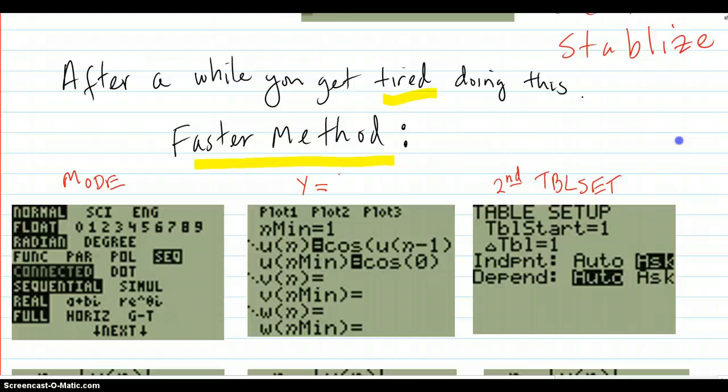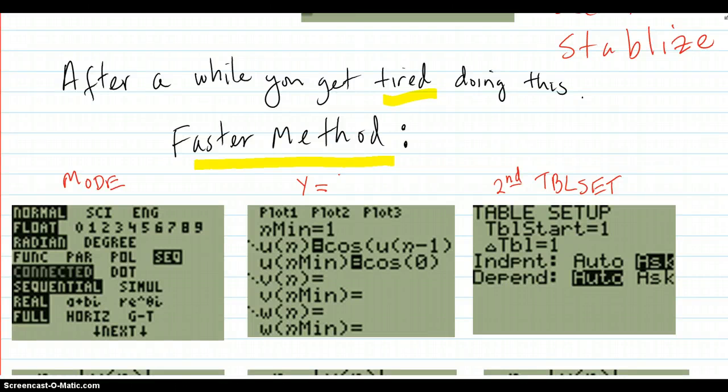You set up a sequence in the calculator. Go to mode, then sequence. Then the Y= key. You put in n minimum, that's not the value, that's the n counter. So that's 1, because we started with x_1.